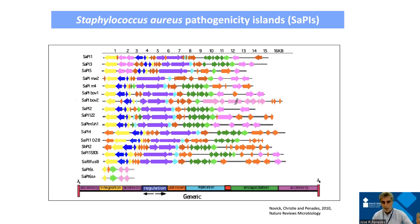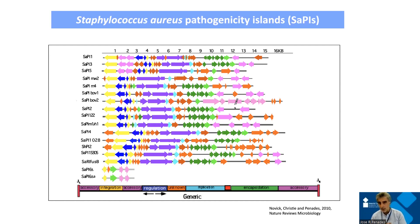You can see examples of many of these SaPIs across different strains. The genetic structure is pretty well conserved — same color, same function for each gene. You always see virulence factors at the end or beginning of the SaPI. All of these SaPIs have one, two, three, or four different virulence factors. Even though they are pretty small, the arsenal is pretty good.